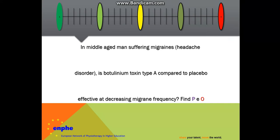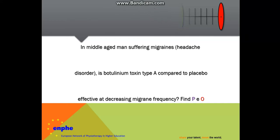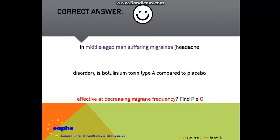Now, let's test your knowledge. You have 15 seconds to find the P — the problem — and the outcome of this research question: In middle-aged men suffering migraines, which is a headache disorder, is botulinum toxin type A compared to placebo effective at decreasing migraine frequency? The answer: the problem or person is middle-aged men suffering migraines, and the outcome is effectiveness at decreasing migraine frequency.